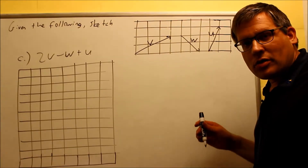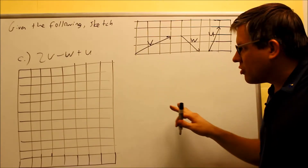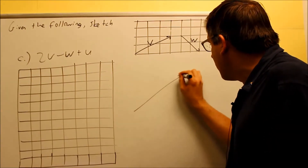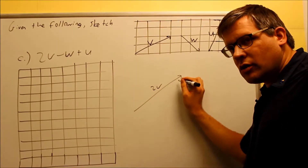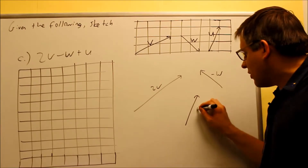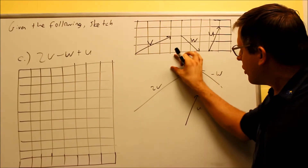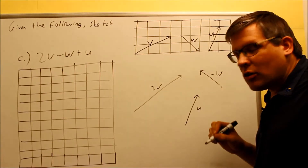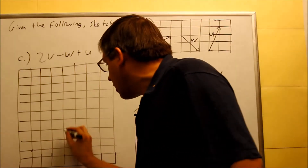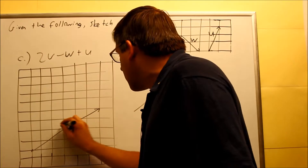Now let's take a look at part C. For part C we're using the same vectors, but now all three: V, W, and U. Remember the minus sign means adding the opposite. A quick sketch: I have 2V — one V and another one — then negative W added on, and then U. I'll add them in order. Starting down here, I'm going to go ahead and draw the 2V — over three, up two, then over three, up two again. That is my 2V.